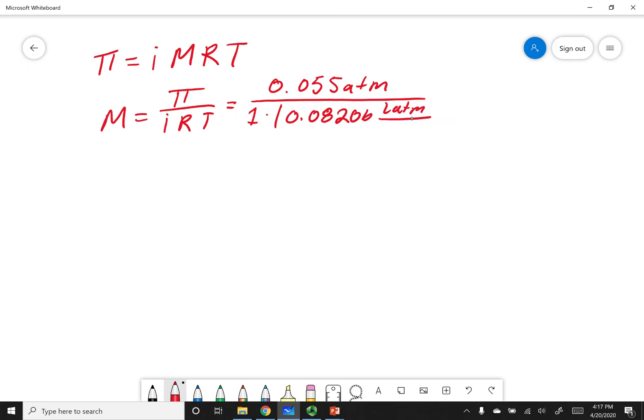Liter, atms, mole, Kelvin. And lastly, let's put our temperature in Kelvin. So 27 plus 273. And so if we work this calculation out, we get our molarity to be 0.00223 moles per liter.